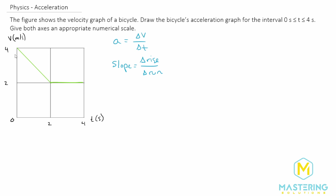What is the rise for a velocity versus time graph? It's the velocity — change in velocity on top, change in rise on top. What is the change in the run? Time. Time is on the bottom, run is on the bottom. So you can see that is why we can get the acceleration from the slope of a velocity versus time graph.